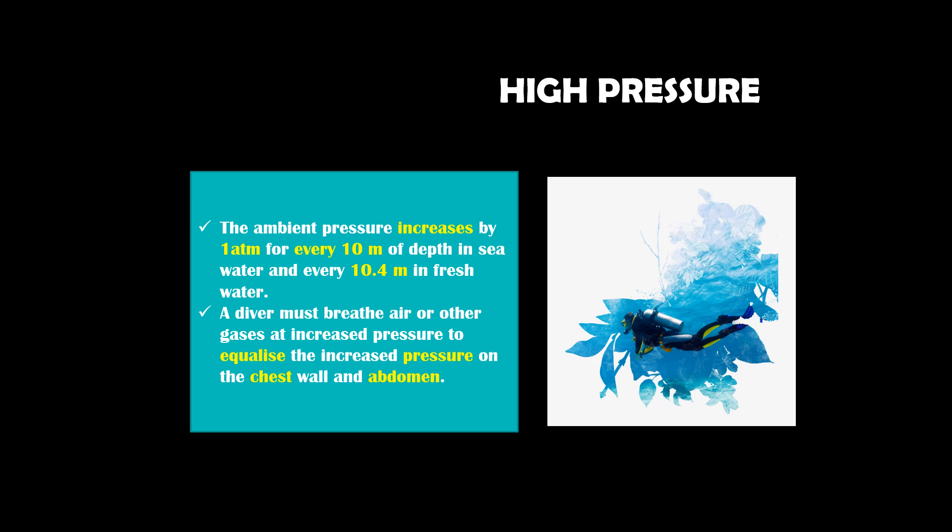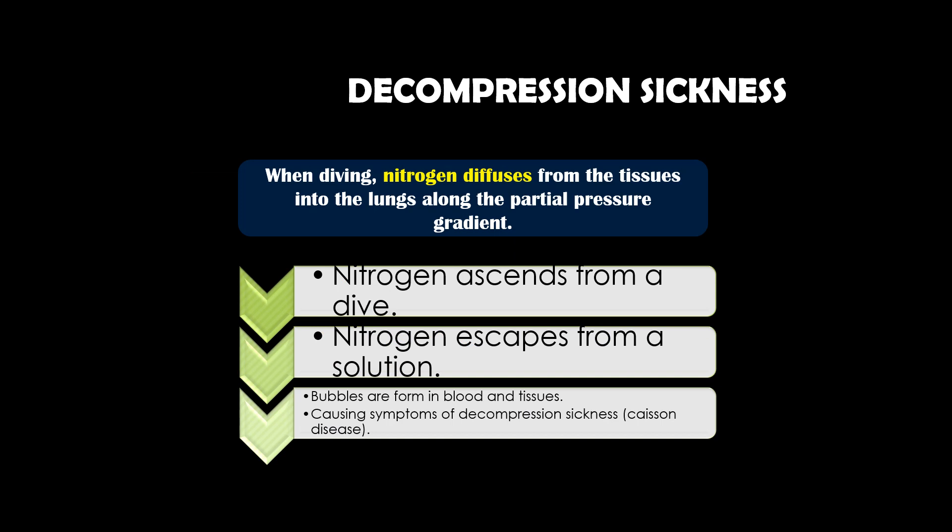Next, we focus on high pressure. At high pressure, the pressure increases by 1 atm for every 10 meters of depth in sea water and every 10.4 meters in fresh water. This means a diver is exposed to 4 atm pressure when diving at a depth of 30 meters in the ocean. In scuba diving, carbon dioxide is removed and 20% oxygen or less is used, as 100% oxygen can be harmful to divers. As a diver ascends, breathing 80% nitrogen from a dive causes nitrogen to diffuse from the tissues into the lungs along the partial pressure gradient. If the ascent is rapid, nitrogen escapes from solution and bubbles are formed in the blood and tissues, causing symptoms of decompression sickness. Bubbles in tissues cause severe pain around the joints, while bubbles in the bloodstream obstruct the arteries to the brain and spinal cord.